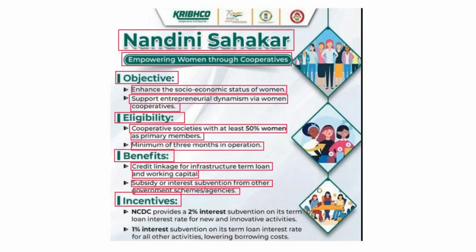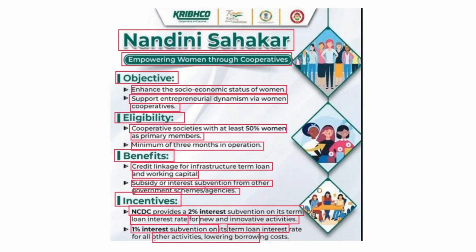Regarding incentives, NCDC provides a 2% interest subvention on its term loan interest rate for new and innovative activities undertaken by women. For all other activities that lower borrowing costs, there is a 1% interest subvention on the term loan interest rate, providing a reduction on the rate of loan interest.